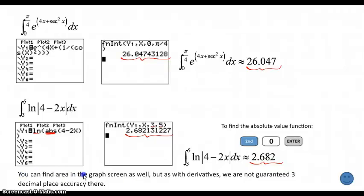So you can find area in the graph screen as well, just like I said last time when we did this before for our other types of functions, but the graph screen is not always accurate to three decimal places. Doing it in the home screen, you are guaranteed that that result is accurate to three decimal places.